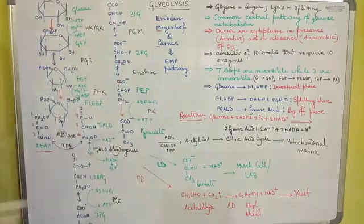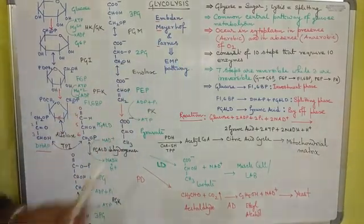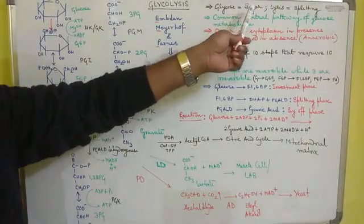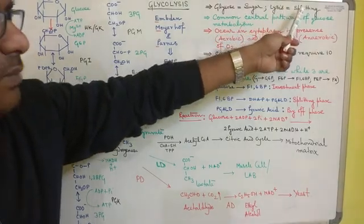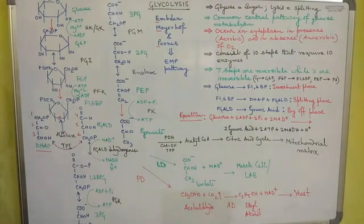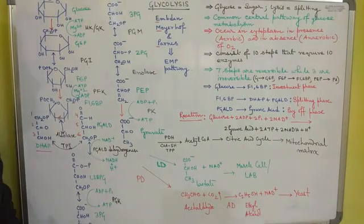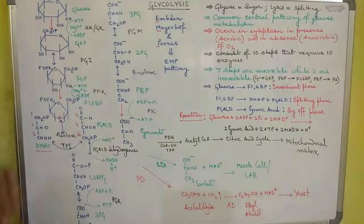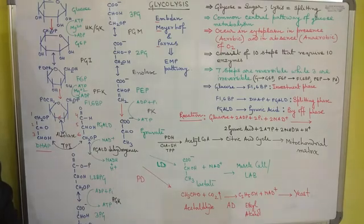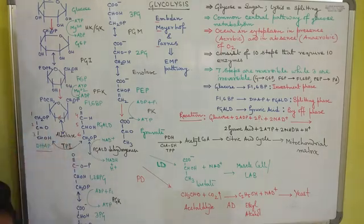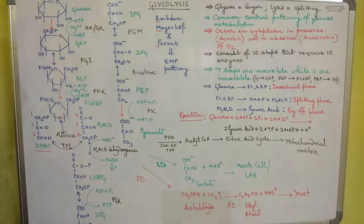The word glycolysis is derived from two Greek words: glycose, meaning sugar, and lysis, meaning splitting. So glycolysis basically deals with the splitting of sugar. It acts as the common central pathway of glucose metabolism during respiration. Glycolysis occurs within the cytoplasm of the cell, both in the presence and absence of oxygen. It consists of 10 steps that require 10 different enzymes.